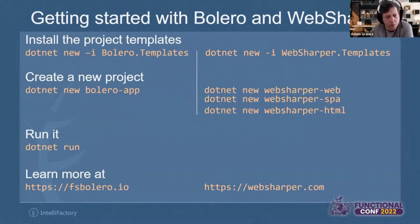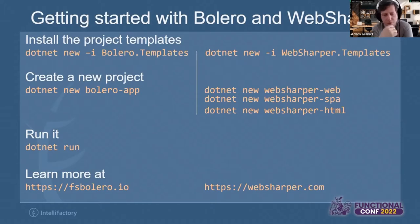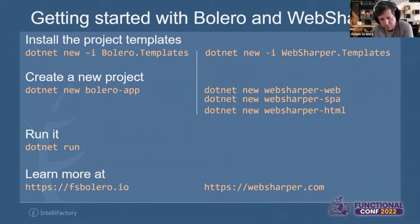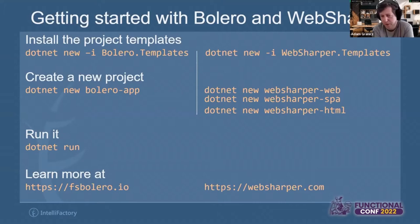You can configure that and read more in the documentation page I'll show in a few minutes. On the WebSharper side, things are a bit different — we have different project templates for different scenarios. For example, if you need a single page application, you can do 'dotnet new websharper-spa'. These templates are bilingual so you can have support for C# as well as F#, or if you want an HTML application or a full client-server application you can use 'websharper-web'.